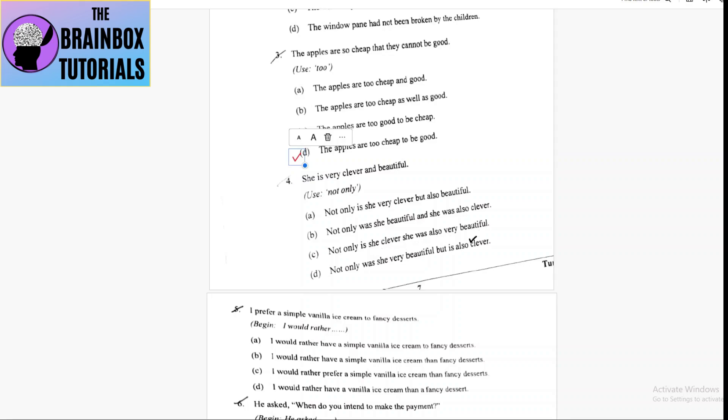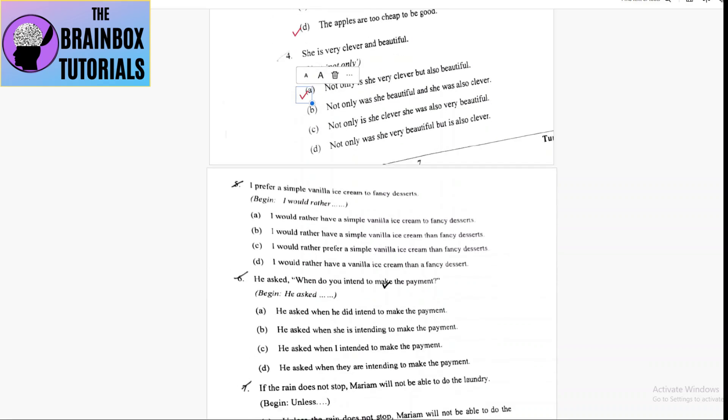Option D: not only was - so 'was' will not be there, obviously 'is' will be there. Option A is correct. Coming to number five: I prefer a simple vanilla ice cream to fancy desserts. Begin 'I would rather'.